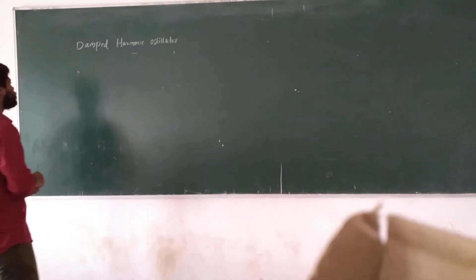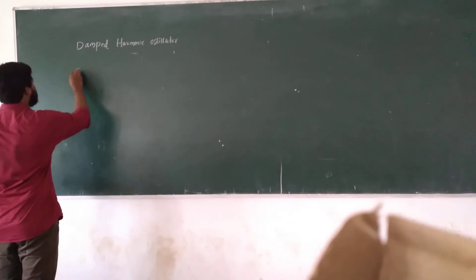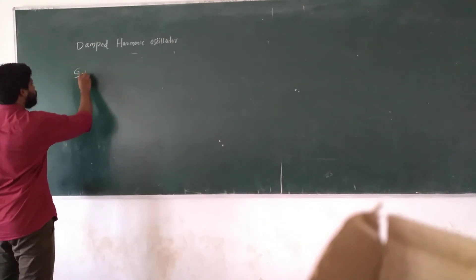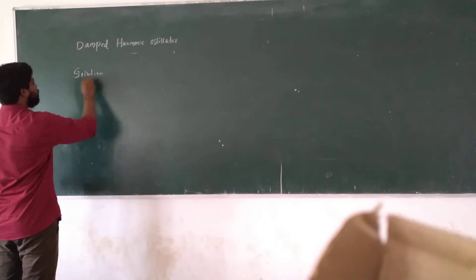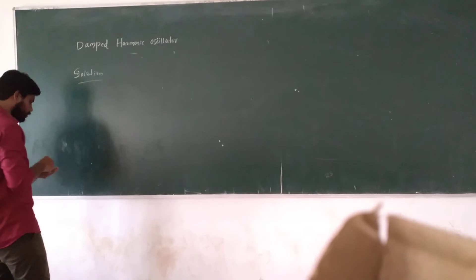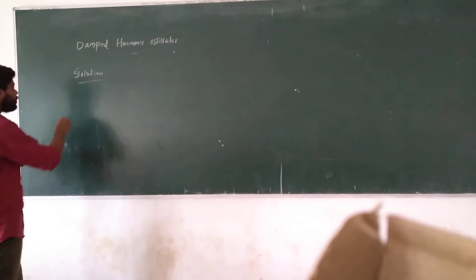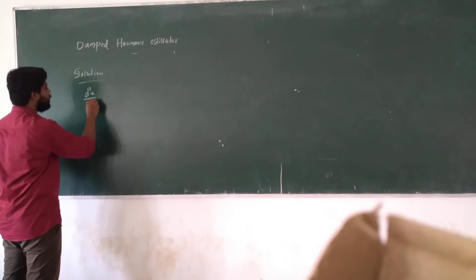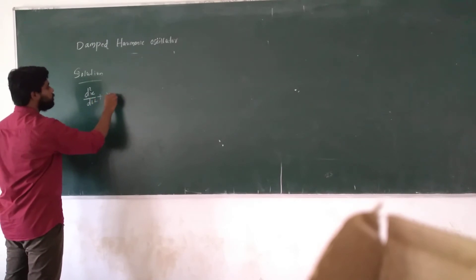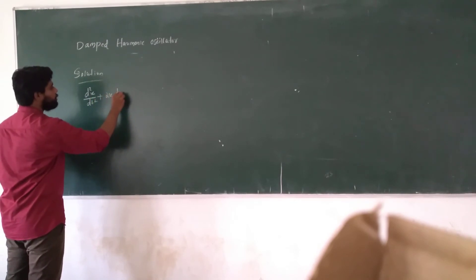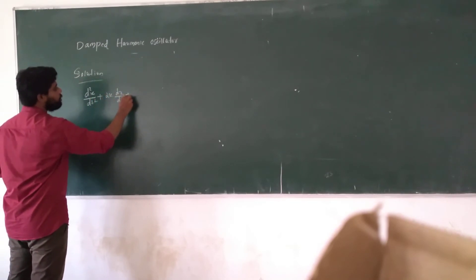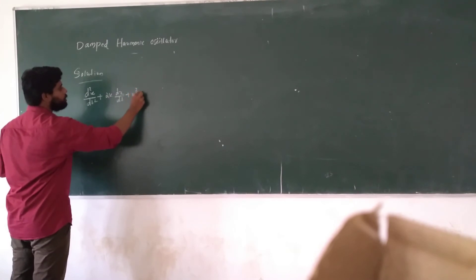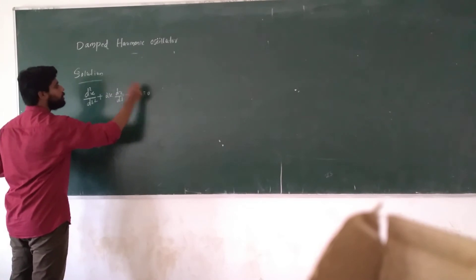We need the solution for the differential equation. The differential equation is: d²x/dt² plus 2k into dx/dt plus omega² x is equal to zero.